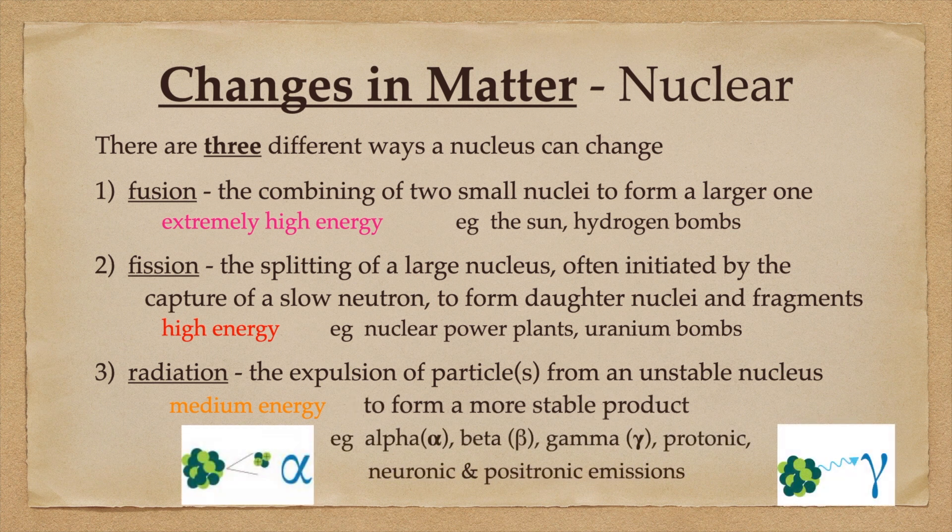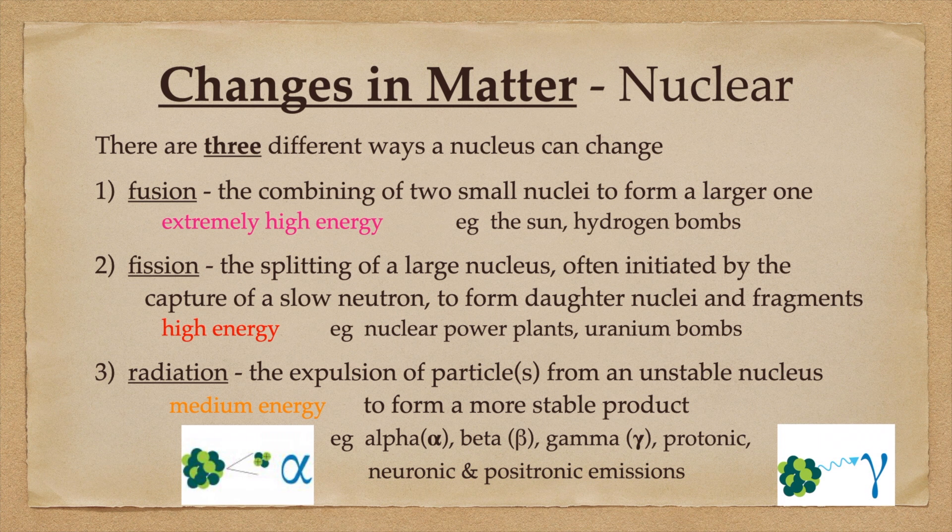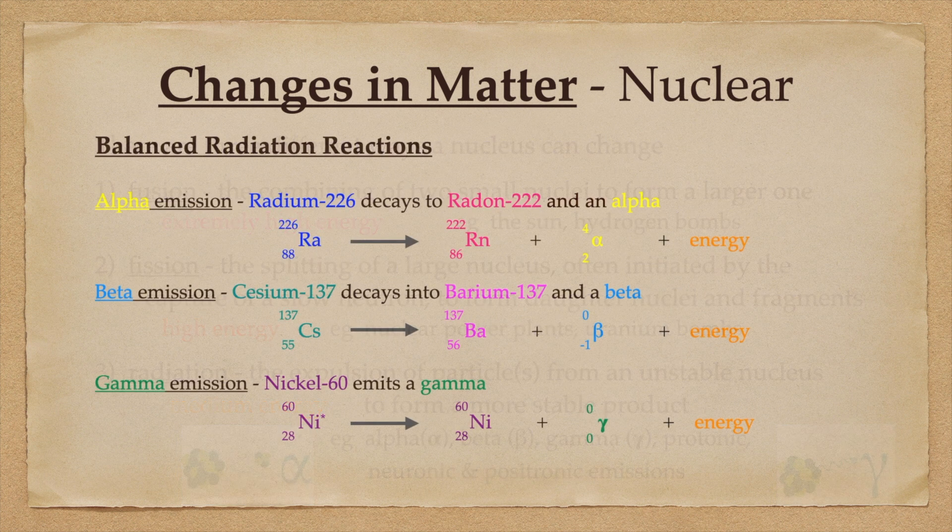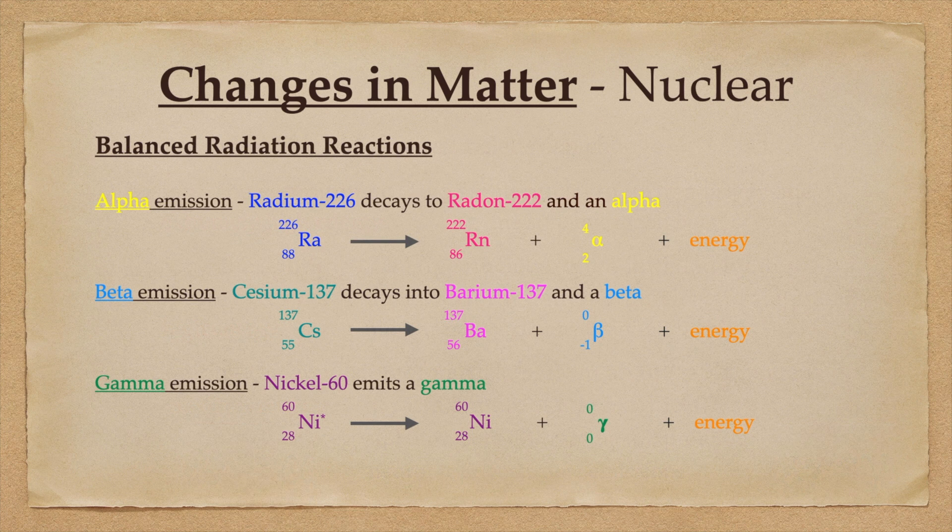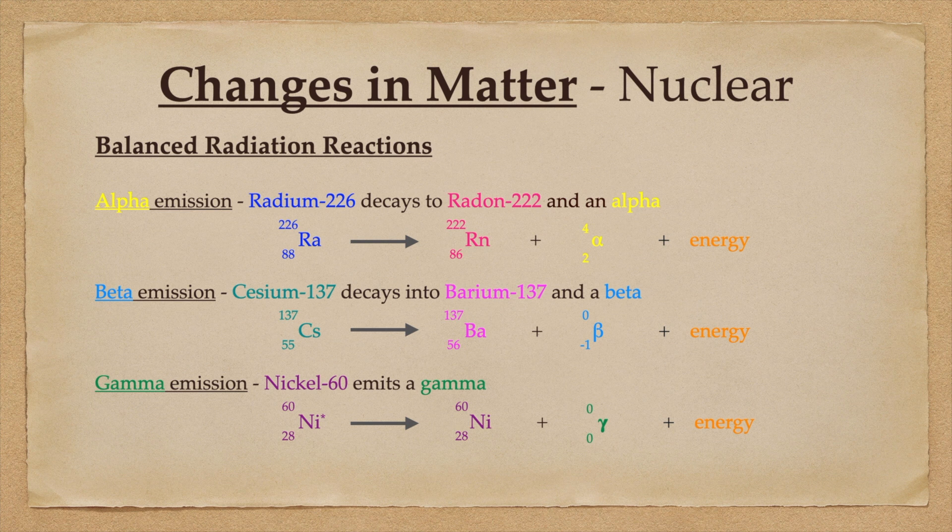We're usually taught that there are three forms of nuclear radiation: alpha, beta, and gamma. But there are actually quite a few. There is also neutronic and positronic emissions, but let's look at the three most common. An alpha emission is actually a helium nucleus. It has a mass of four and a charge of plus two. So when radium-226 decays by alpha, it produces radon-222, an alpha particle, and some energy.